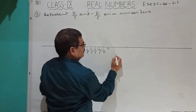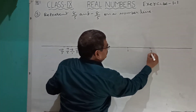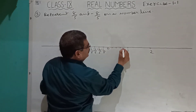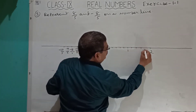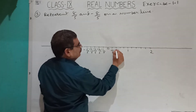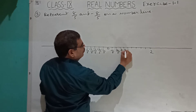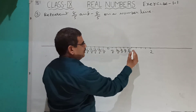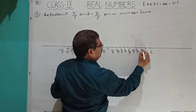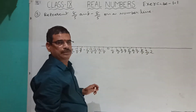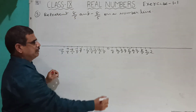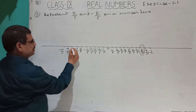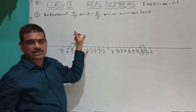Here this is 1 centimeter divided into 5 parts. On the positive side: 1 by 5, 2 by 5, 3 by 5, 4 by 5, 5 by 5 which equals 1, then 6 by 5, 7 by 5, 8 by 5. So 8 by 5 is here, and minus 8 by 5 is the corresponding point on the negative side. This is the answer.